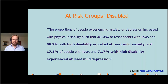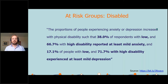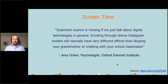The proportions of people experiencing anxiety or depression increases with physical disability, such that 38% of respondents with low disability and 66.7% with high disability reported at least mild anxiety. That rises to 17% of people with low disability and 71.7% with high disability experiencing at least mild depression.